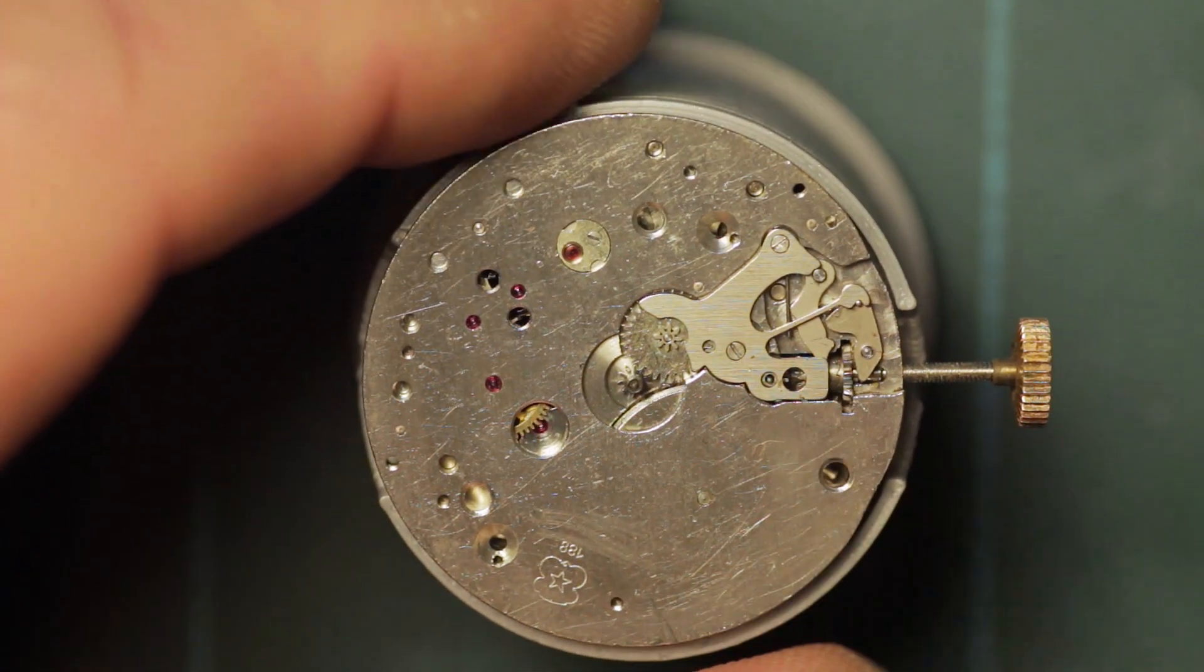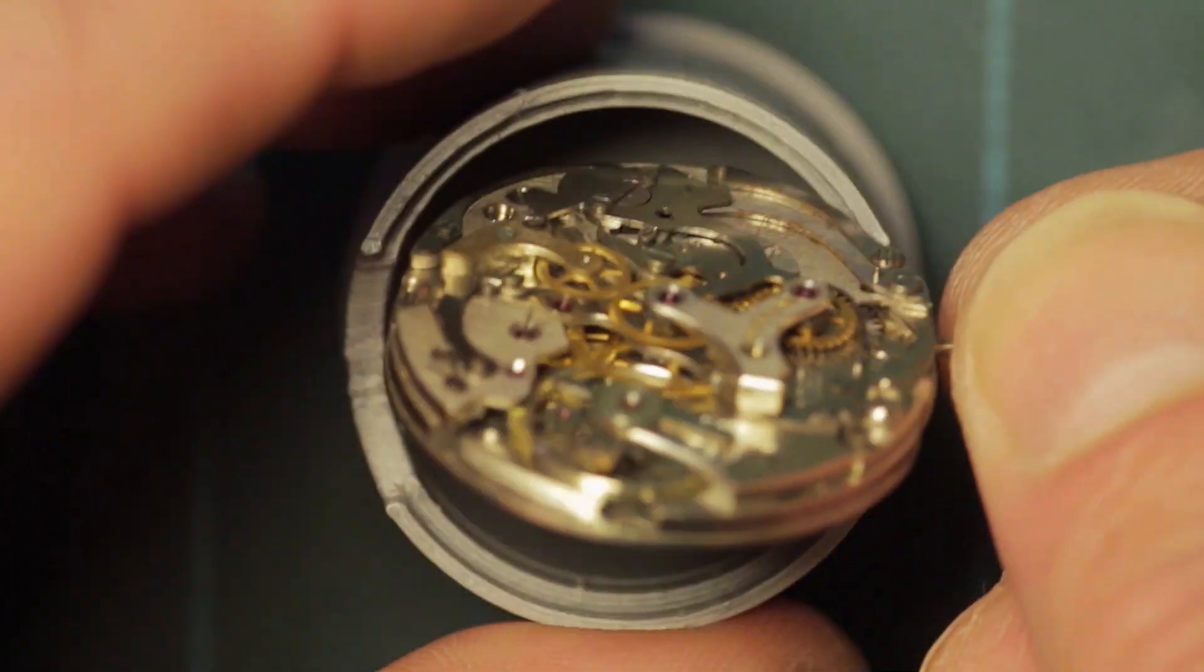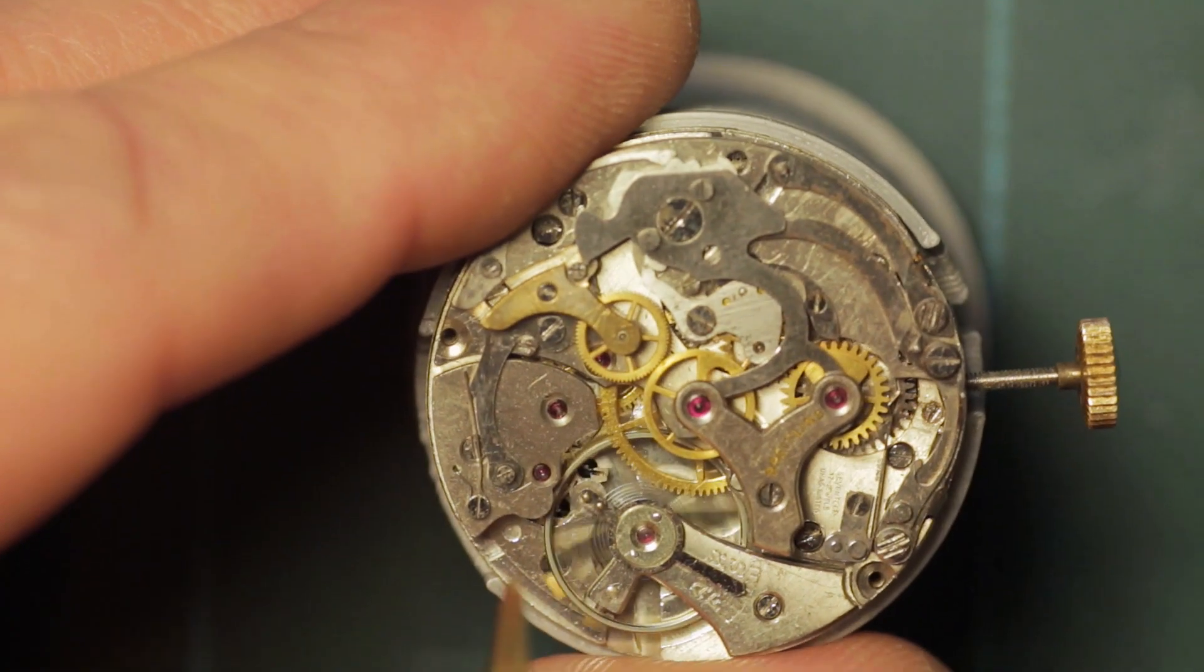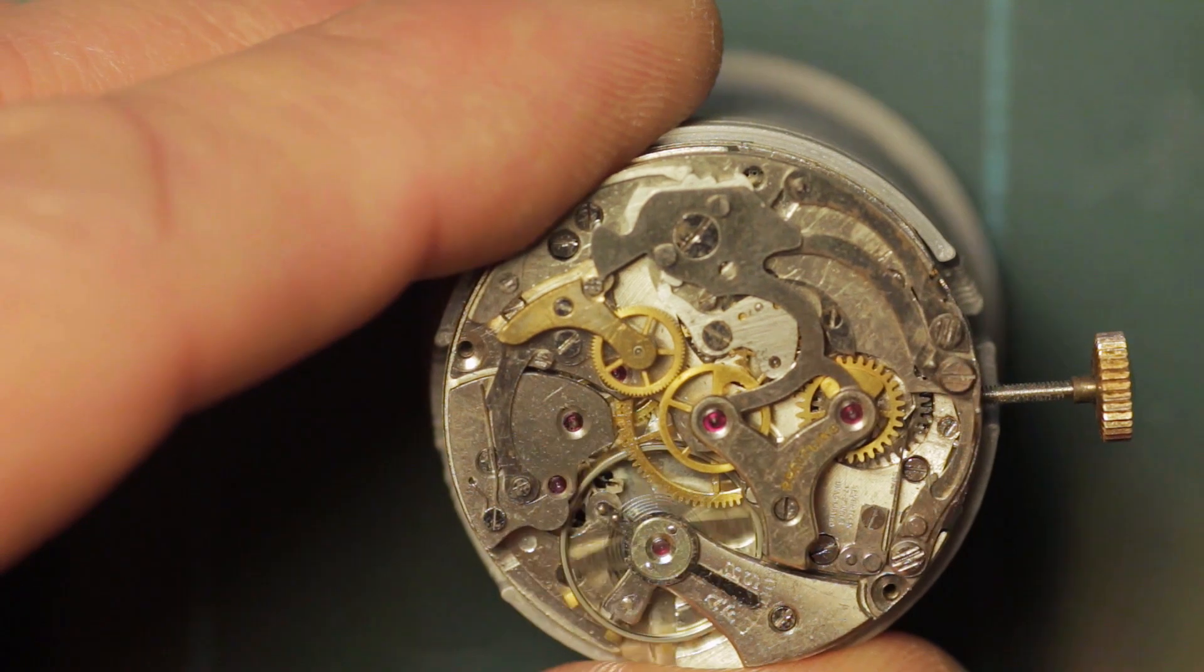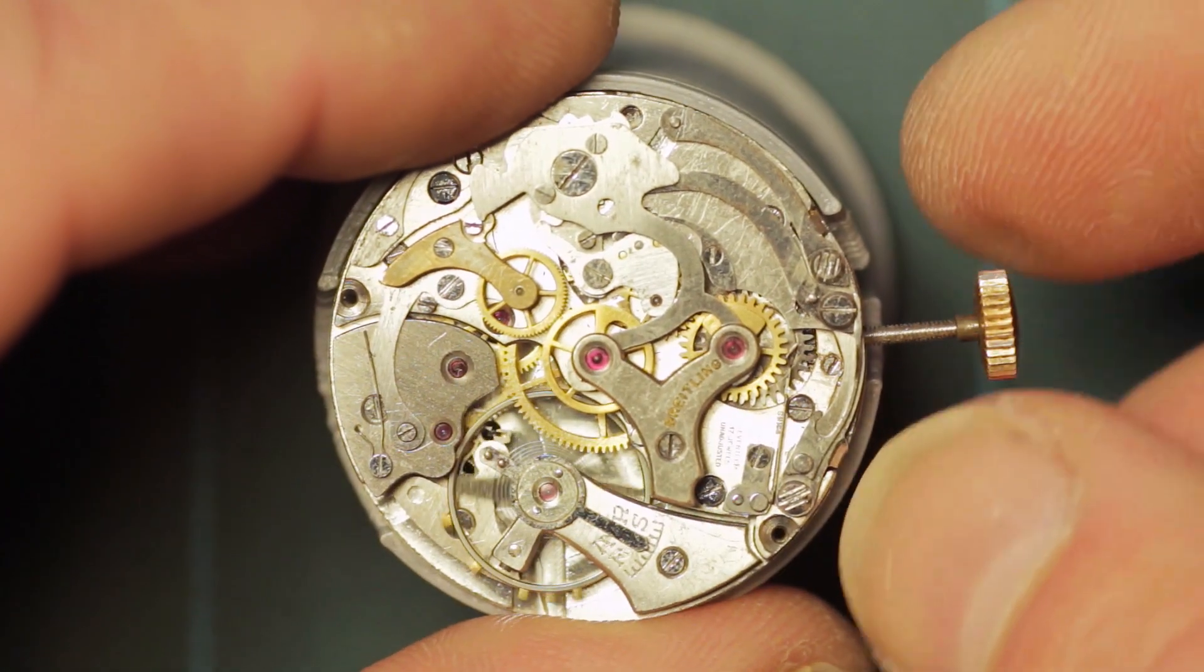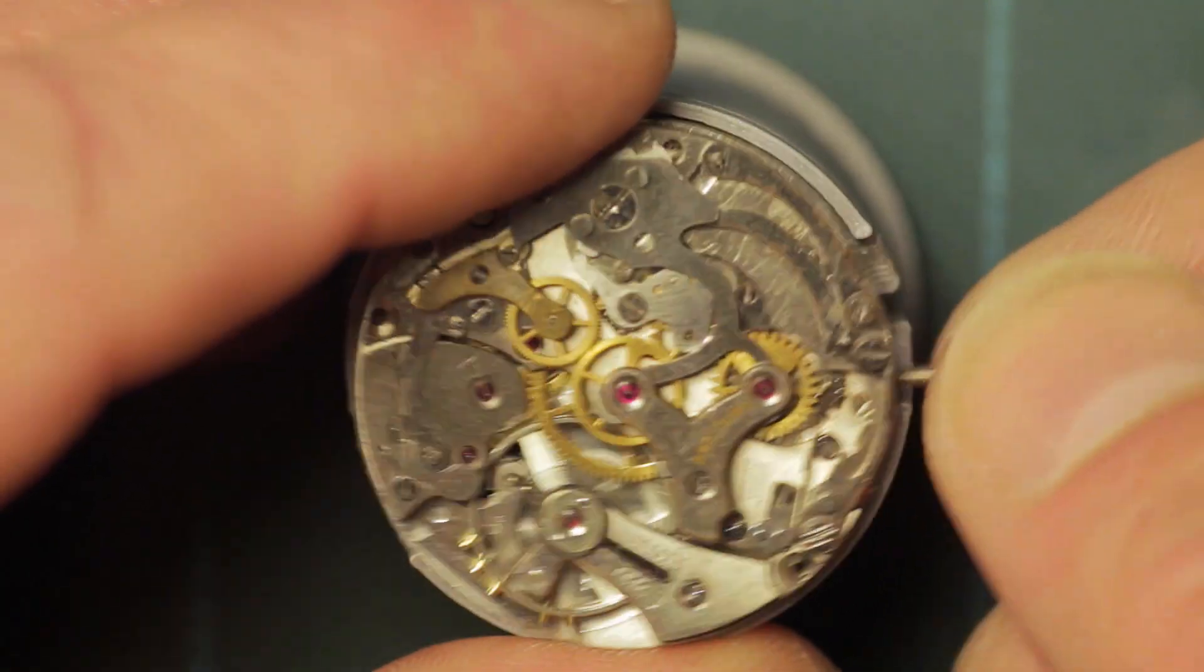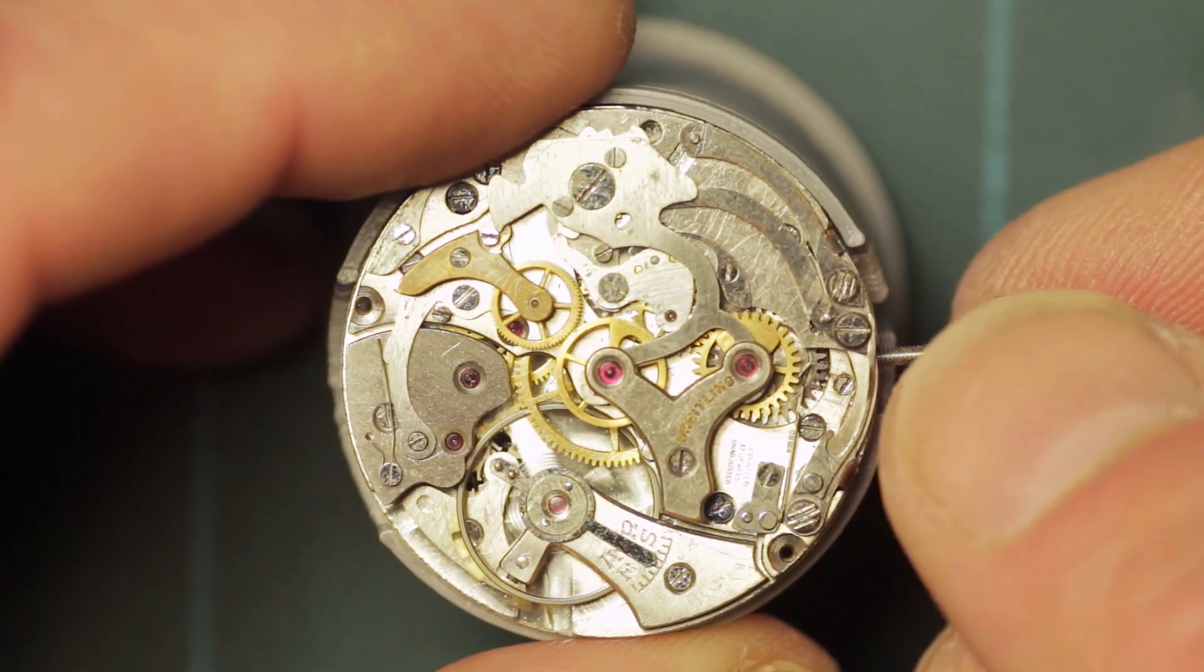Another problem was the fact that the fourth wheel extended pivot is bent - the one that the wheel sits on, which comes out here. That's bent, it's something I'm going to have to try and straighten. Having now gotten the stem to fit, you can see that the balance is swinging. It's very lackluster, so hopefully a good clean will help that no end.